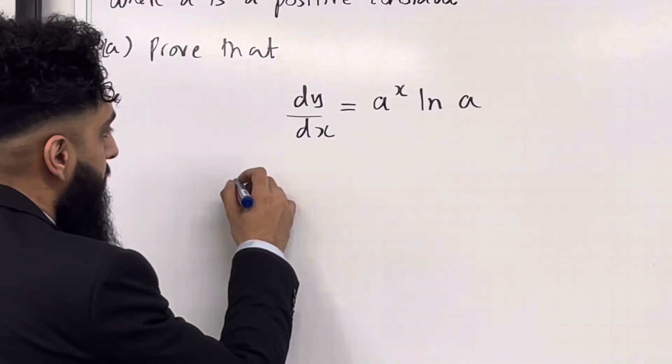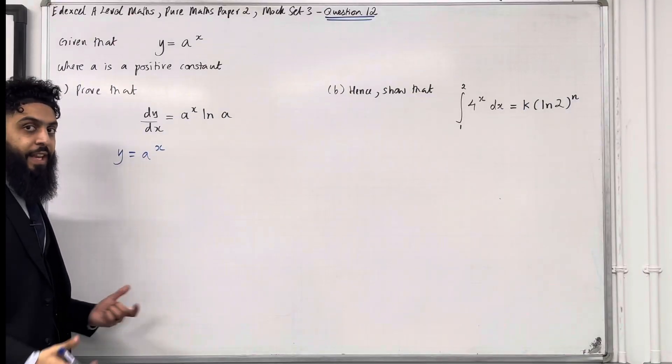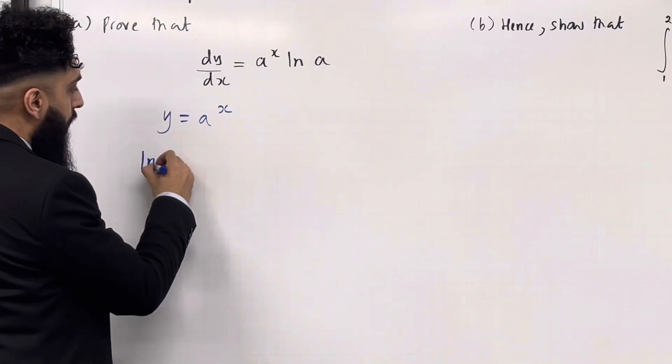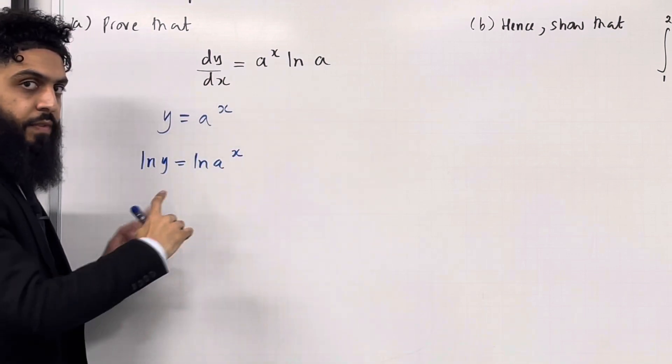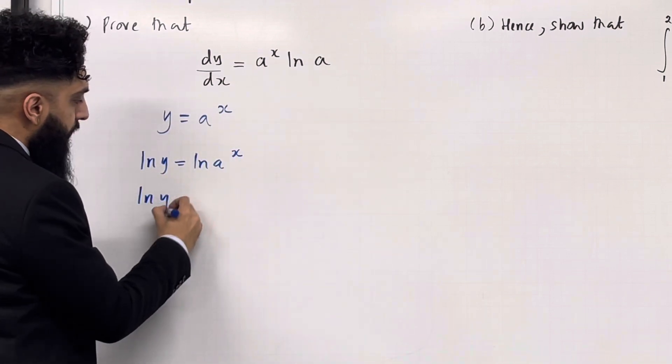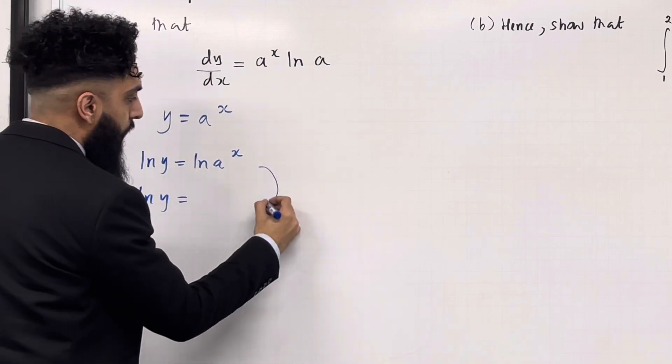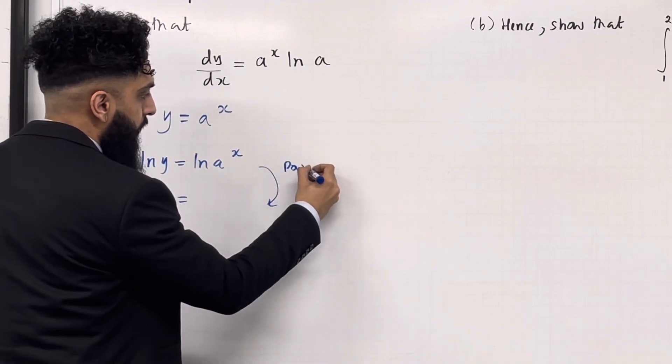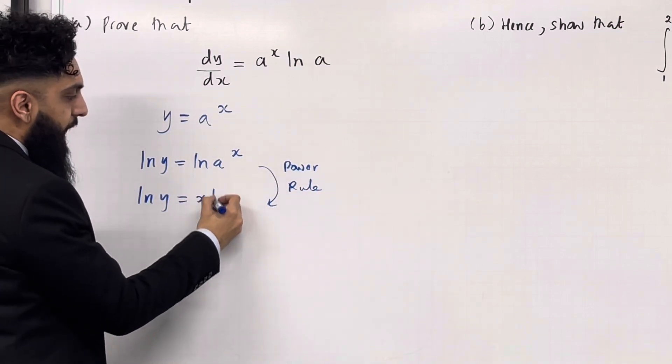We need to start off with y equal a to the power x. The next step is to apply ln on both sides. Once you've done this, we've got ln y is equal. We can bring down the power x using the power rule for logs. So we're going to apply the power rule. So I've got x ln a.